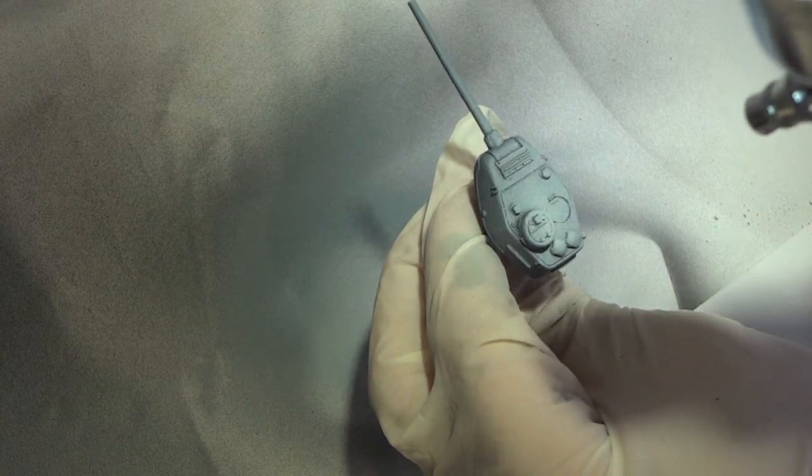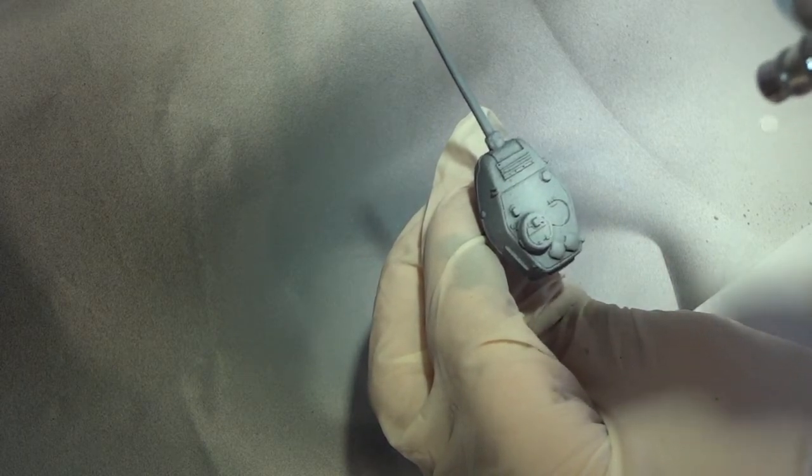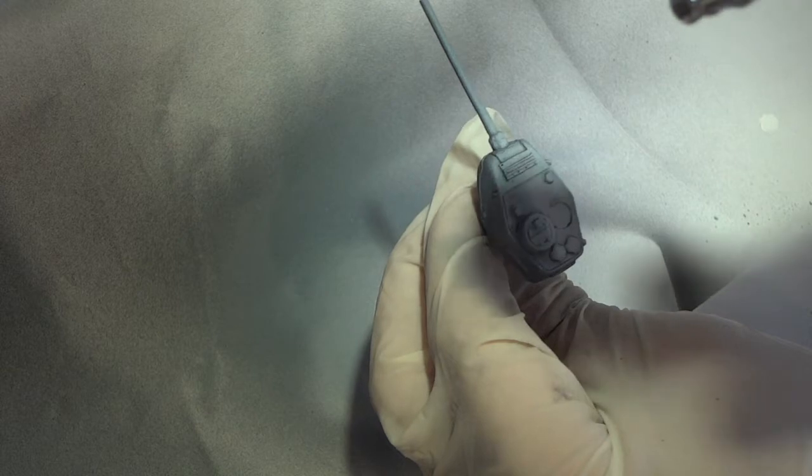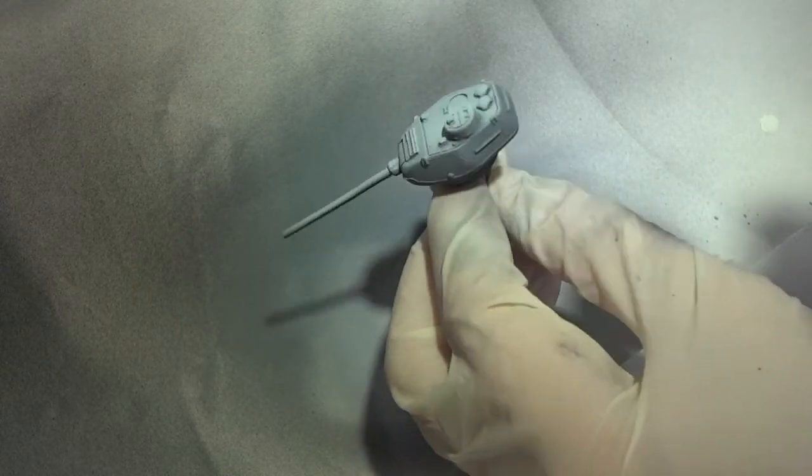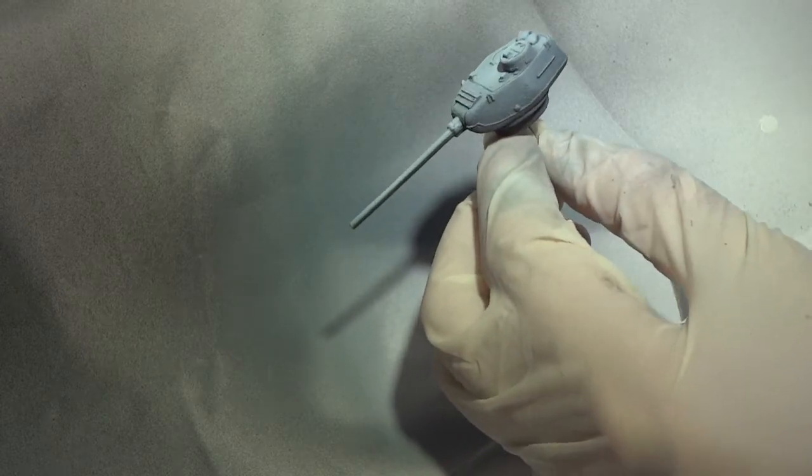This same technique is used for all of the layers of paint that I'm going to apply. However, as I get into the lighter colours, I apply lighter and lighter coats, and more selectively onto the highlight areas, instead of dusting over the entire model.